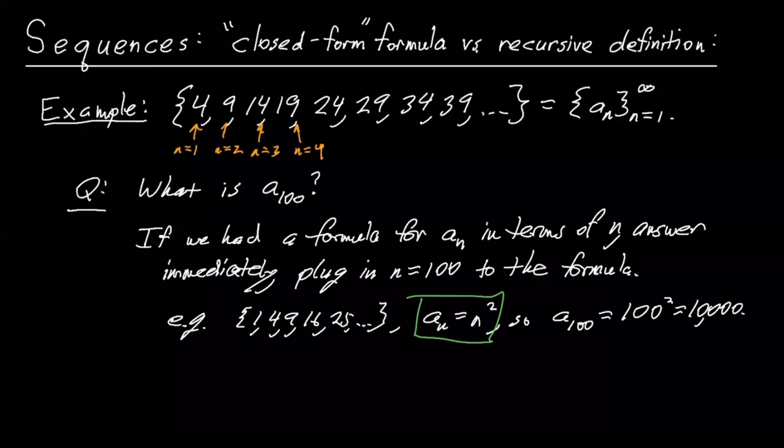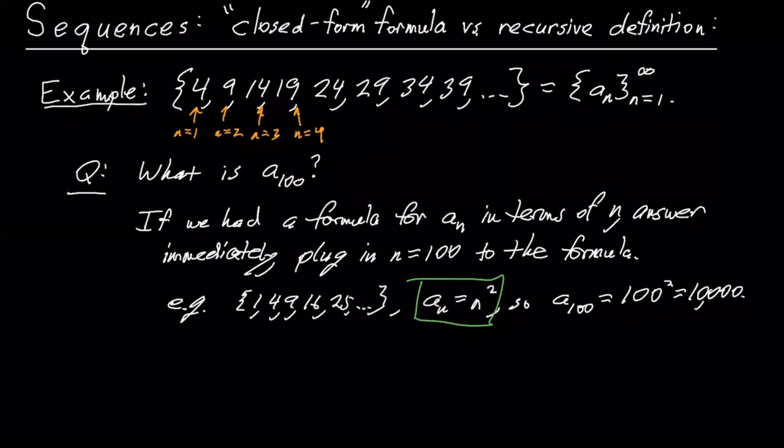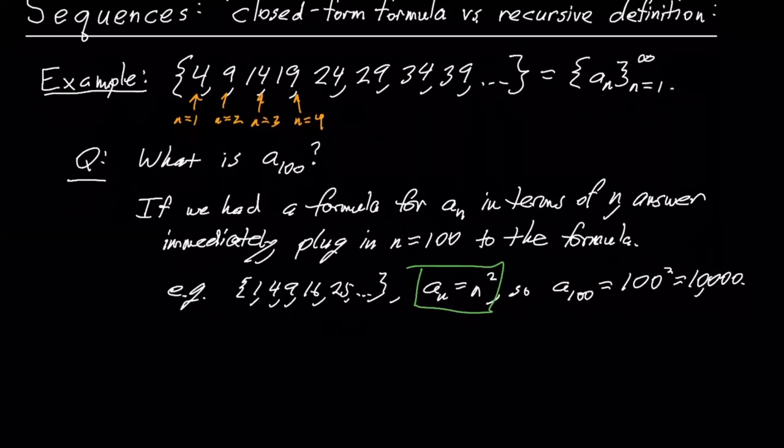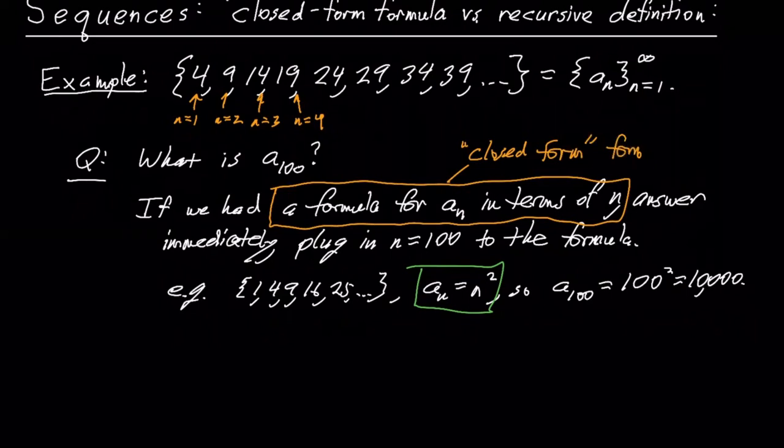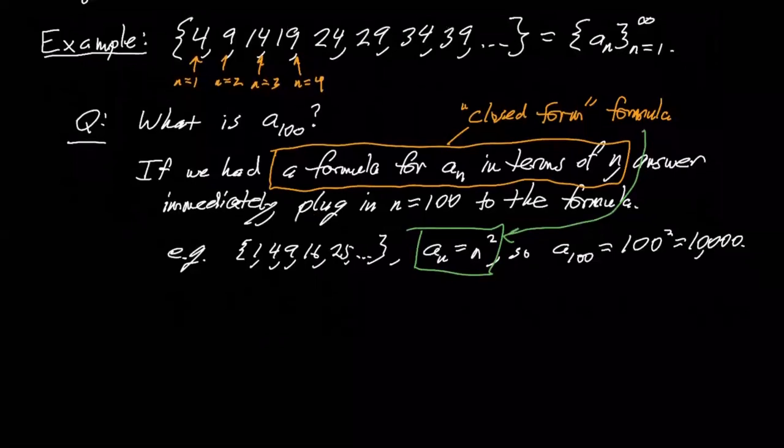But maybe the formula is not obvious here. You could probably pause the video and figure it out, but I just want to mention it's not obvious. But by the way, such a formula, if we have a formula like this, that's a formula for a sub n in terms of n, that's what's called a closed form formula. Meaning all you got to do is plug in n. You don't have to do any sort of prediction or calculate all the previous terms of the sequence, for example. And so this example down here, this is a closed form formula for the squares. It's an obvious one, but it's worth mentioning. So that's called a closed form formula.